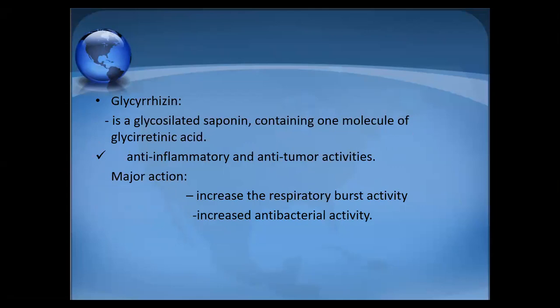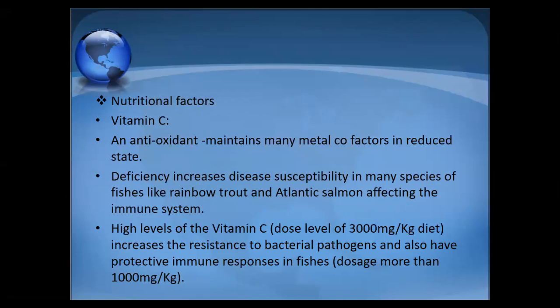Other nutritional immunostimulants include Vitamin C. As with its use during COVID-19, Vitamin C is an antioxidant that maintains many metal co-factors in reduced state. Deficiency increases disease susceptibility. Studies on rainbow trout and Atlantic salmon show effects on the immune system. High levels of Vitamin C increase resistance to bacterial pathogens and provide protective immune responses. The recommended dose level is 1000 to 3000 mg per kg per diet.